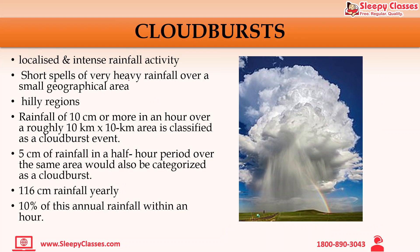When we define cloudbursts, what is it? When there is a very high intensity of rainfall, it will be called a cloudburst. That means there are short spells of very heavy rainfall in a small geographical area or in hilly regions. When we talk about any cloudburst event, we discuss conditions: when it comes to 10 centimeters over a 10 by 10 kilometer area within an hour, we call it a cloudburst event. Similarly, if it covers a 5 by 5 kilometer area within a span of half an hour, it will also be called a cloudburst.